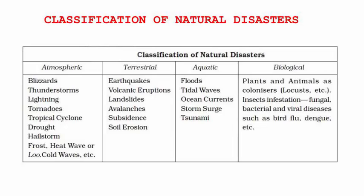So let's go through the four classification types again. First, atmospheric — above the land and below the sky. Second, terrestrial — everything done by God which is not under human control. Third, aquatic — anything related to water. And fourth, biological — everything related to disease, bacteria, and viruses which we cannot see yet which create a lot of problems. This is the classification of natural disasters.